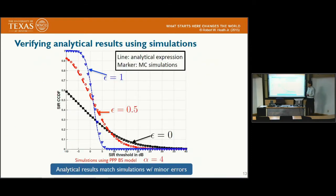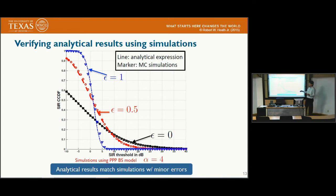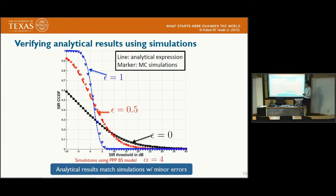In this slide, we want to verify our analytical result and confirm that our approximation is accurate. Here, the markers show Monte Carlo simulation results, and the lines show the SINR distribution computed from our analytical result. We show that with different parameters, the markers and the lines match each other very well, confirming that our approximation is highly accurate.